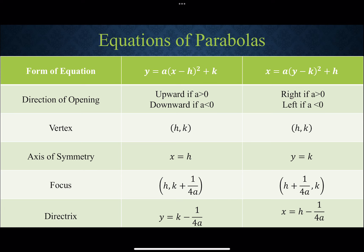The equation is either y equals a times (x minus h) squared plus k, the vertex form of a quadratic, which opens up or down depending on whether a is positive or negative. The horizontal parabola uses x equals a times (y minus k) squared plus h. Be careful: for the horizontal form, the y coordinate of the vertex goes inside the parentheses, not x. It goes right when a is positive, left when a is negative.